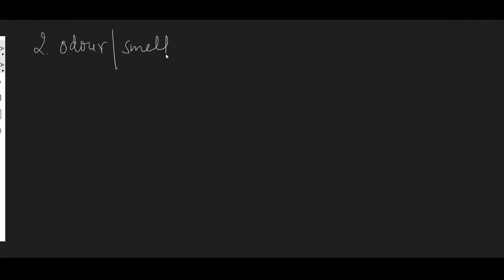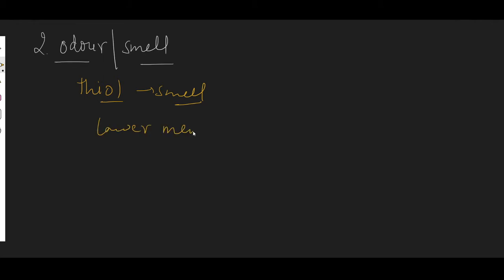The second property is odor, or smell. All thiols have a particular smell — some are unpleasant. Lower members of thiols — meaning up to carbon number eight — have a strong and offensive smell.